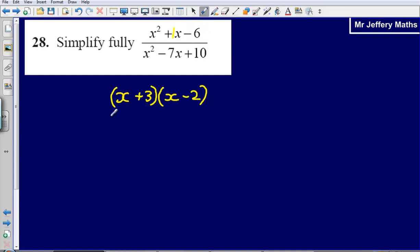So we've got x plus 3, x minus 2 on the top, and that's going to be over, and I'm just going to do exactly the same process here, factorising x squared minus 7x plus 10. So that's going to give me x minus 5,